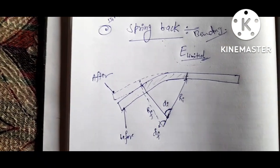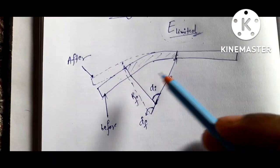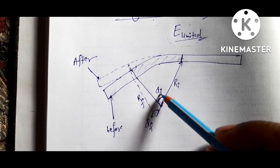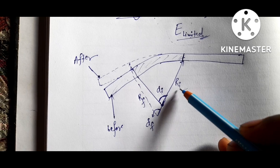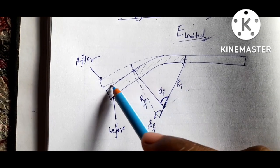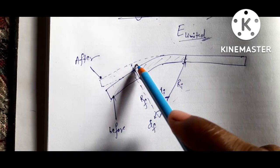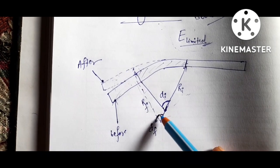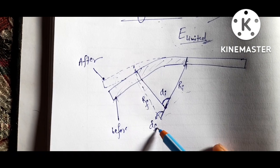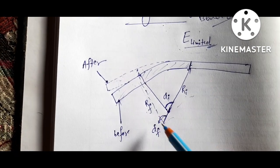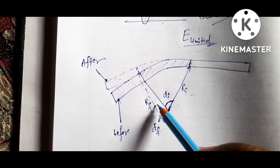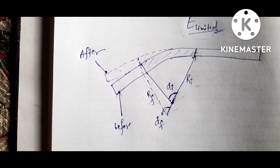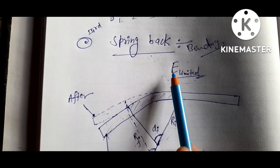In this figure, this is the original bended part having an initial bend angle and initial bend radius. After spring back, here is the final bend radius and the final bend angle — rf and alpha f are the final values, while alpha i and ri are the initial values.